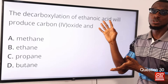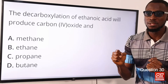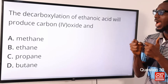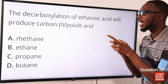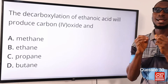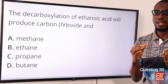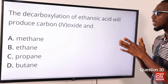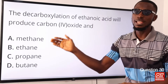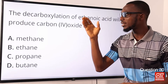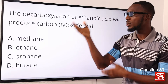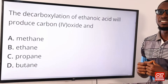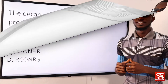Question 30: The decarboxylation of ethanoic acid will produce carbon dioxide and what? This reaction uses soda lime. When soda lime is introduced, what will be produced are carbon dioxide and an alkane with a lower molecular mass, which is methane. The correct option is CO2 and CH4 — that is carbon dioxide and methane — so the correct option is option A for methane.